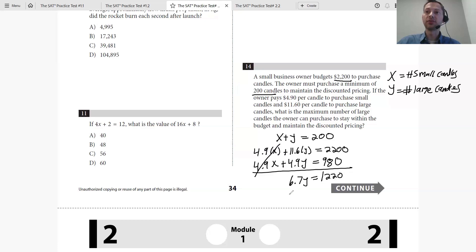So you have 6.7Y equals 1220. Divide by 6.7, you have Y equals 182. So now we know Y is 182. We can figure out X if we want, but let's just look to see what they're asking.